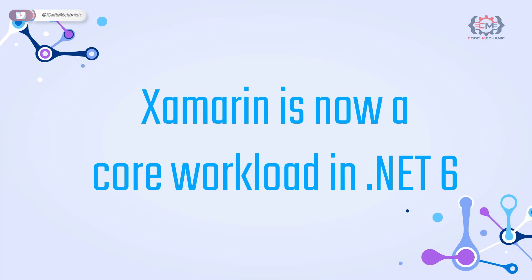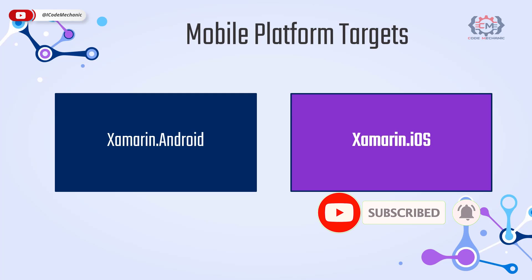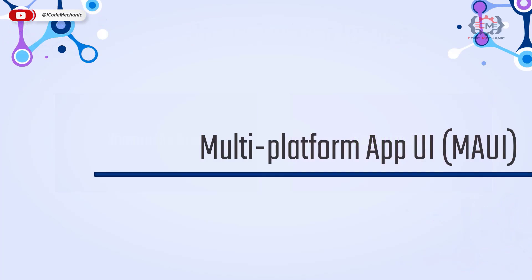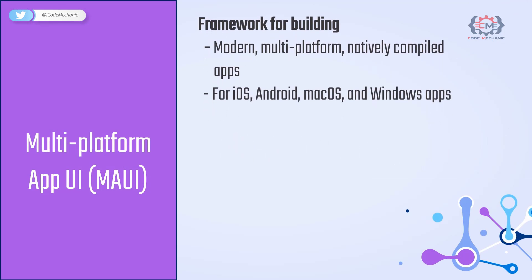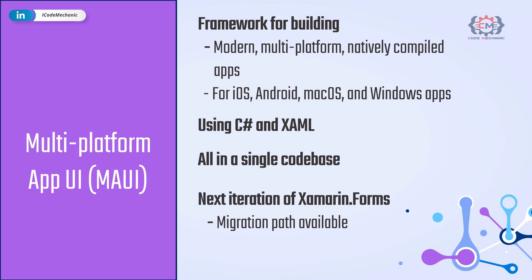Xamarin.Android and Xamarin.iOS are now platform targets, referred to as .NET for Android and .NET for iOS, as they are .NET bindings to the native SDKs from Google and Apple respectively. Then there is MAUI — the .NET Multi-platform App UI — a framework for building modern, multi-platform, natively compiled iOS, Android, macOS and Windows apps using C# and XAML in a single codebase. MAUI is the next iteration of Xamarin.Forms — a rebranding as well as major upgrades — and you can migrate Xamarin.Forms apps to MAUI.